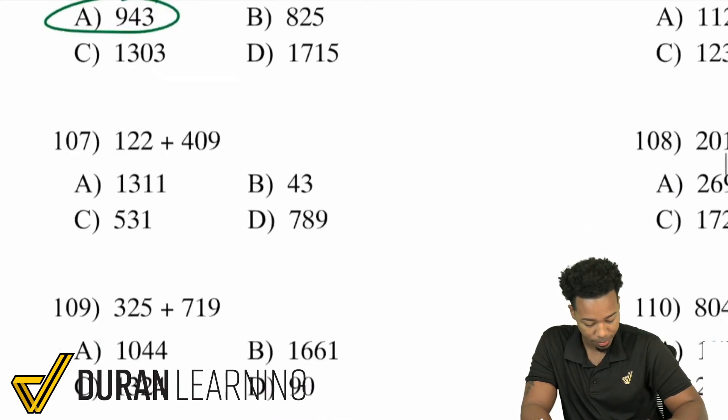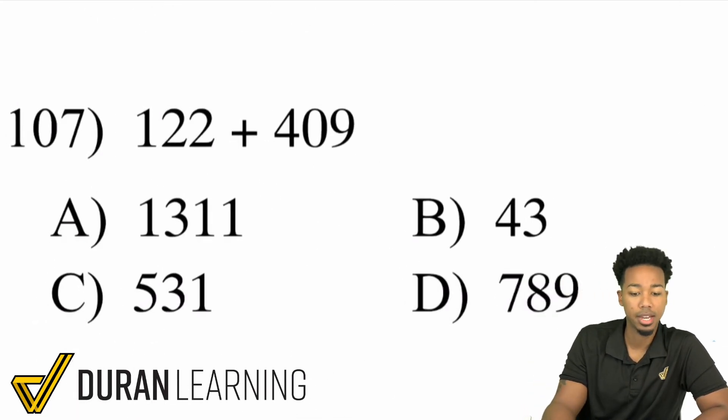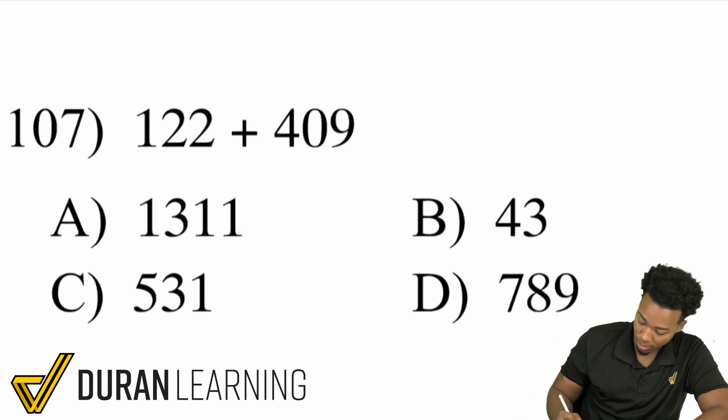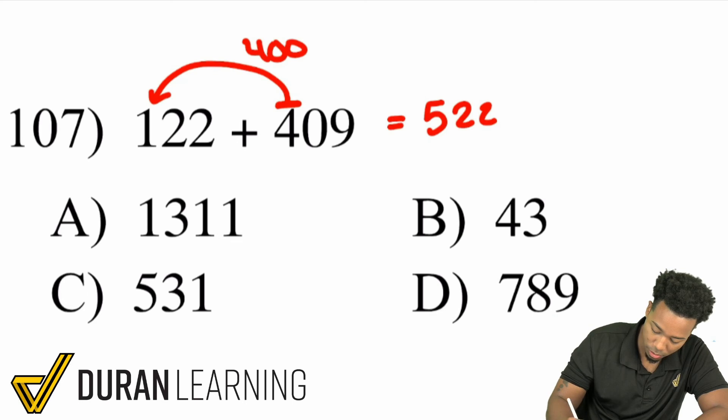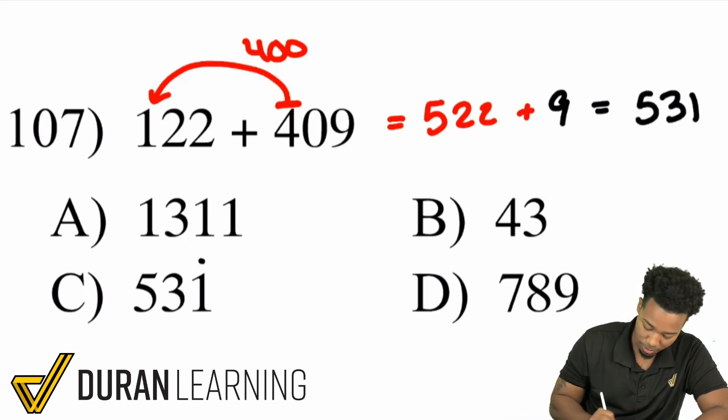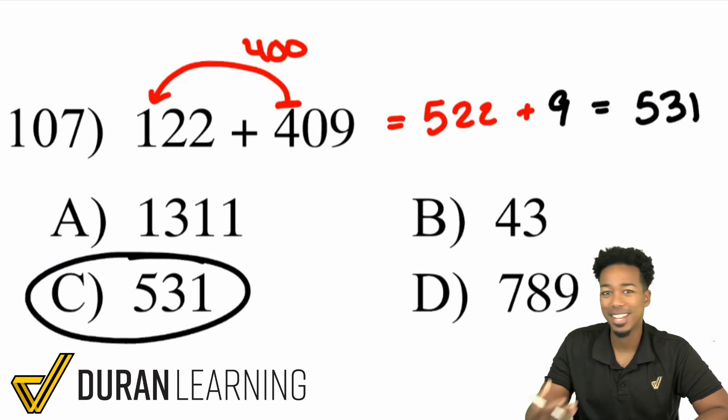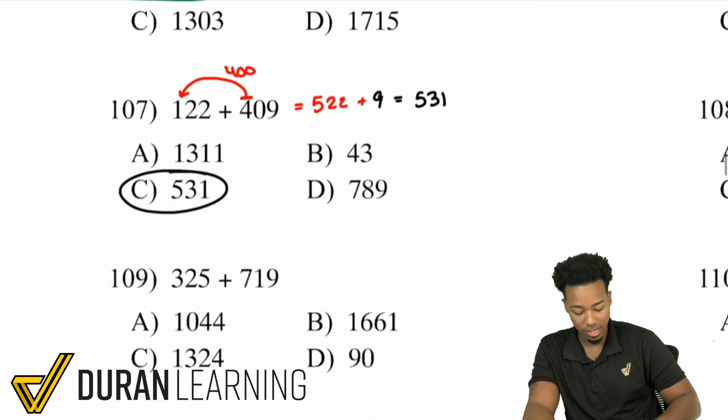Here's another example. Let's say we're looking at 122 plus 409. I can go ahead and just add one digit at a time in my head. So what I can do is this, add the 400 first in my head, and that'll be 522 plus the remaining 9. 522 plus 9, well, 22 plus 9 is 31. So that'll become 531. Again, I'm telling you, this is one of the easiest ways to take a look at arithmetic, and this will give you the best opportunity to get this done the right way.